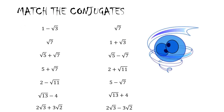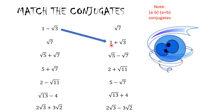In the following activity we are going to match the conjugates. Remember that (a − b) and (a + b) are conjugates — the only difference is the sign between them. So (1 − radical 3) its conjugate is (1 + radical 3): same numbers but the negative sign becomes positive.